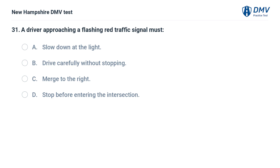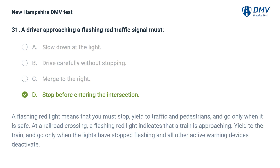A driver approaching a flashing red traffic signal must: A) slow down at the light, B) drive carefully without stopping, C) merge to the right, D) stop before entering the intersection. The answer is D. A flashing red light means you must stop, yield to traffic and pedestrians, and go only when it is safe. At a railroad crossing, a flashing red light indicates that a train is approaching — yield to the train and go only when the lights have stopped flashing and all other active warning devices deactivate.